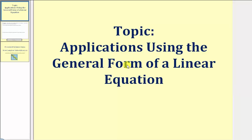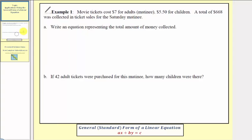Welcome to a lesson in which we'll solve an application problem using the general form of a linear equation. For a quick review, the general form of a linear equation, sometimes called standard form, is the form ax plus by equals c, where we have the variable terms on the left and a constant on the right.